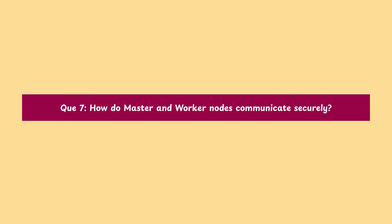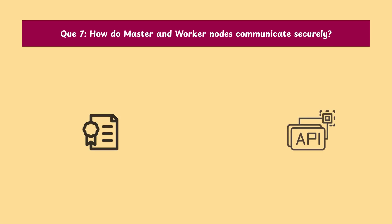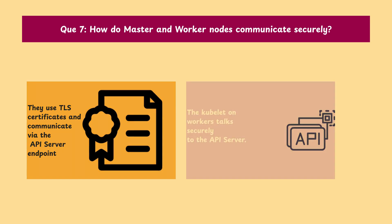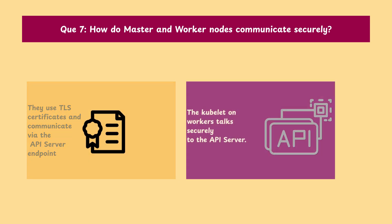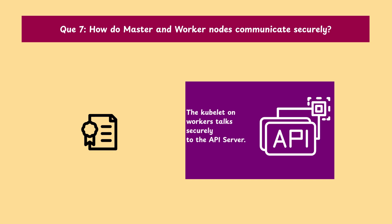Question 7: How do master and worker nodes communicate securely? They use TLS certificates and communicate via the API server endpoint. The kubelet on worker nodes talks securely to the API server.